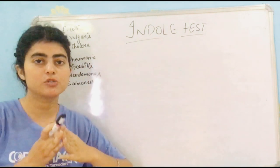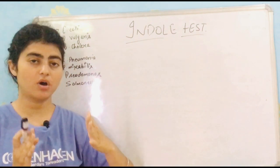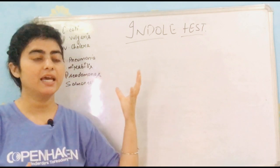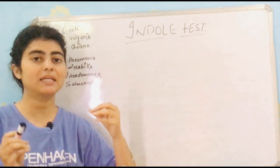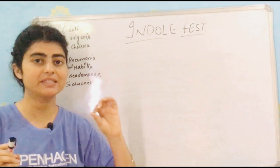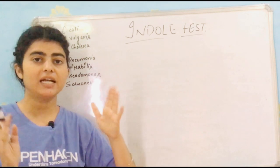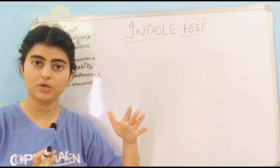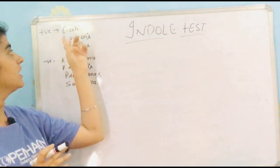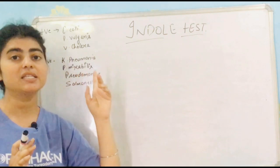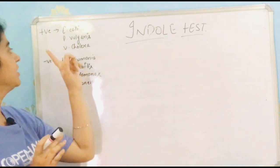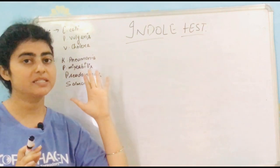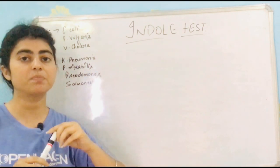The indole test is basically based on an enzyme reaction. In the indole test, we check whether the bacteria produces tryptophanase enzyme or not. There are certain bacteria that produce tryptophanase enzyme, for example Escherichia coli, Proteus vulgaris, and Vibrio cholerae.